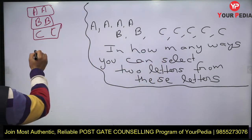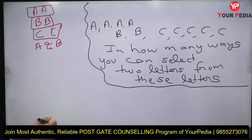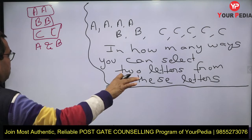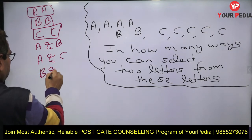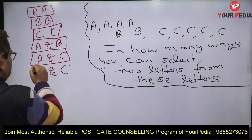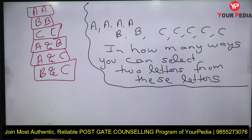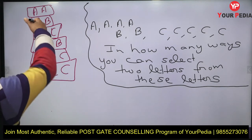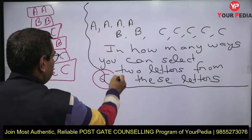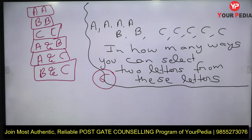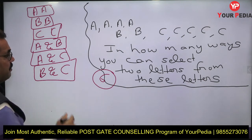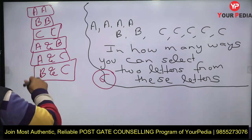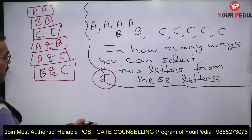Now if you want both letters to be different, you can choose A and B — that is one selection. You need not arrange them; A and B, and B and A, is not a different selection. Then A and C, and B and C. So we have three selections with different letters. In total we have two plus four — sorry, three plus three — six selections. So the answer is six. We are only selecting, not ordering or arranging them.